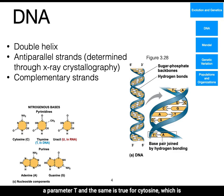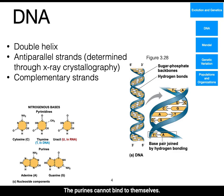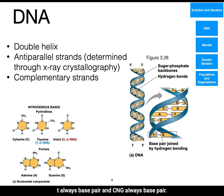Adenine, a purine, only hydrogen bonds to thymine, which is a pyrimidine. And the same is true for cytosine, which is a pyrimidine, which will only hydrogen bond to guanine, which is a purine. Because of the double helix structure and the structure of each of these bases, the purines cannot bind to themselves and the pyrimidines cannot bind to themselves. Biologists have concluded based on evidence that both A and T always base pair and C and G always base pair.